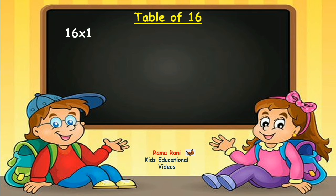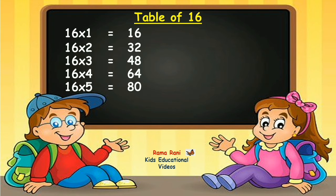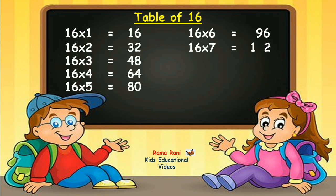16 ones are 16. 16 twos are 32. 16 threes are 48. 16 fours are 64. 16 fives are 80. 16 sixes are 96. 16 sevens are 112. 16 eights are 128.